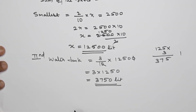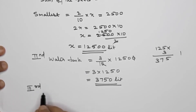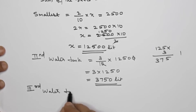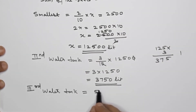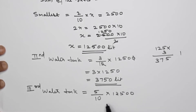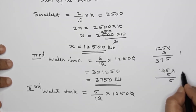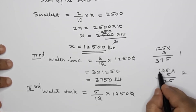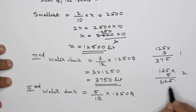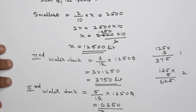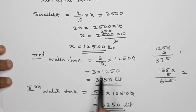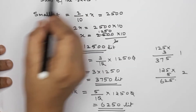The third water tank holds 5 by 10 into 12,500, which equals 5 into 1,250 equals 6,250 liters. The first (smallest) water tank is 2,500 liters. So the other two tanks hold 3,750 liters and 6,250 liters respectively.